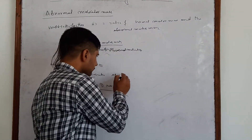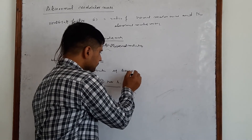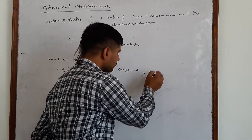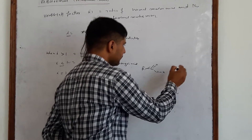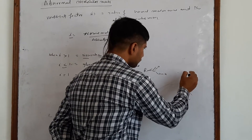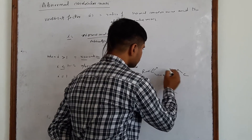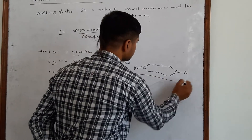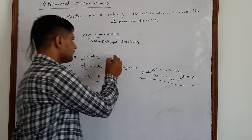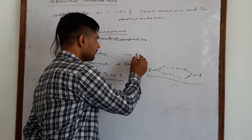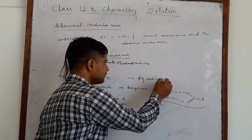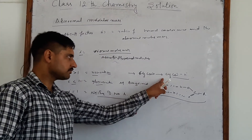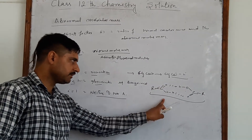For example, benzoic acid undergoes intermolecular association in certain solvents, forming dimers. This is the concept of association — the number of effective molecules decreases, so the observed molar mass increases, while in dissociation, the molar mass decreases.